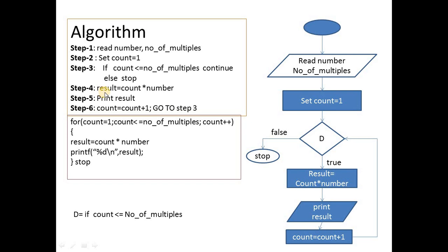Continuing means going to step 4: result equals count times number. For example, if the number is 6, it computes 1×6, 2×6, 3×6, 4×6, and 5×6, then prints the result. In step 6, count is incremented: count = count + 1. After incrementing, it goes back to step 3 to check the condition again.